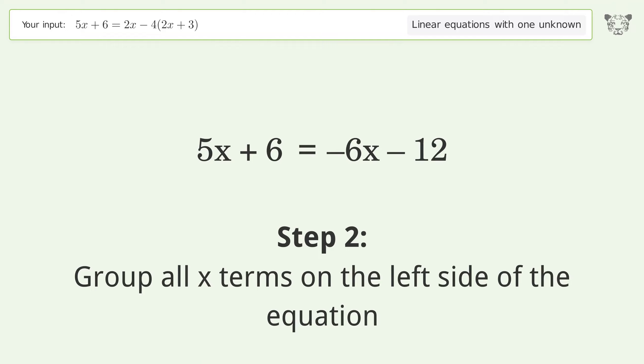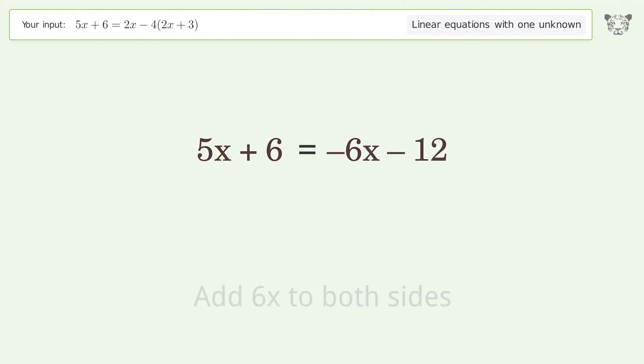Group all x terms on the left side of the equation. Add 6x to both sides. Group like terms.